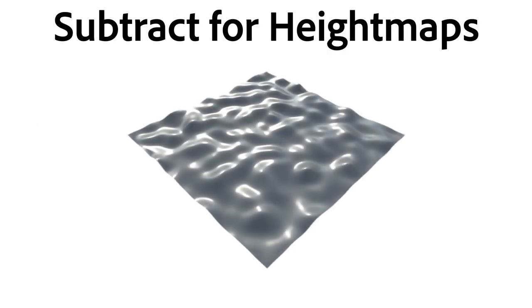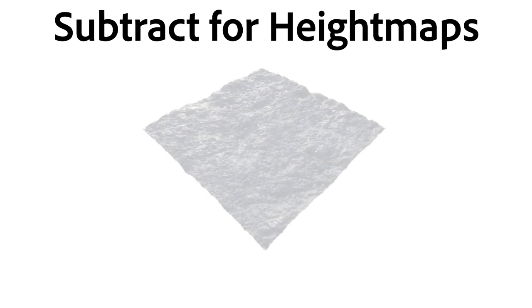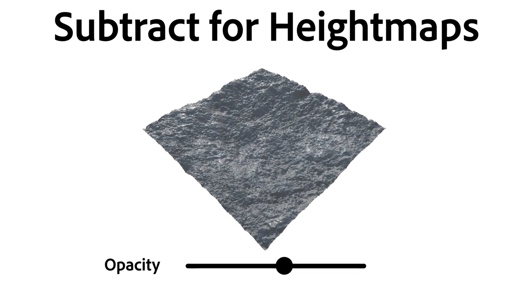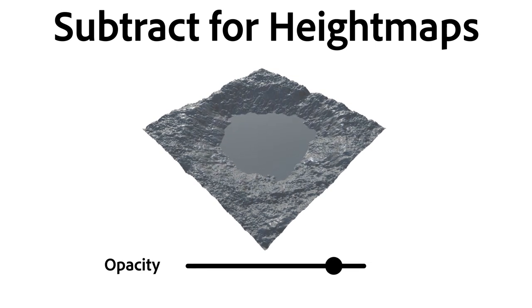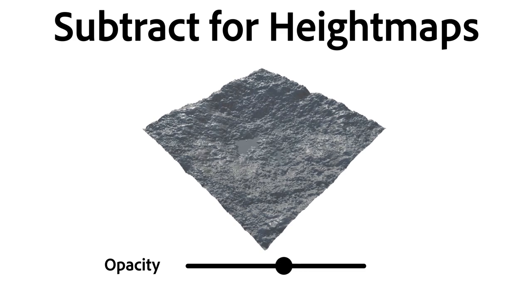For height maps, subtract works like an inward extrude, moving results more the wider the top component is. Again, the opacity slider is important, as height maps can easily hit the bottom limit of zero, causing unwanted visual results.